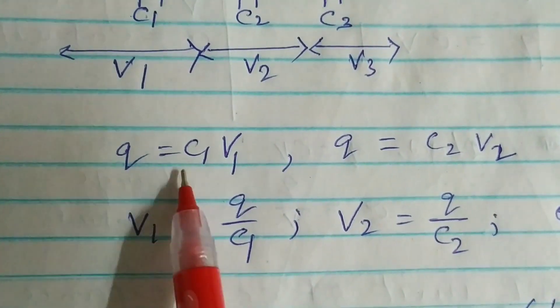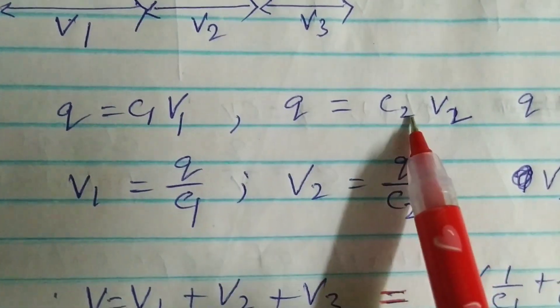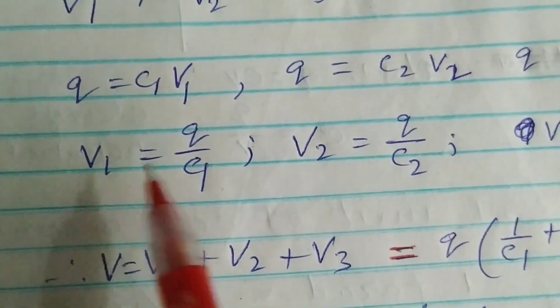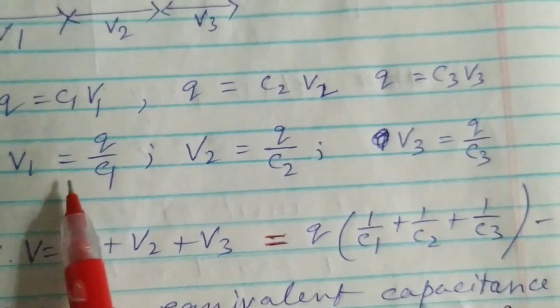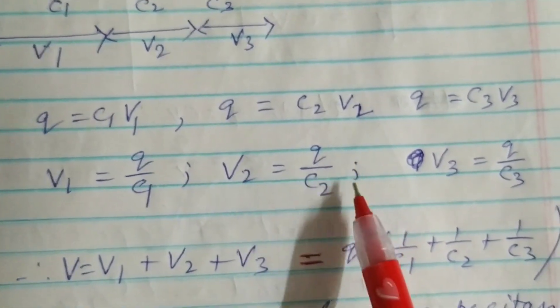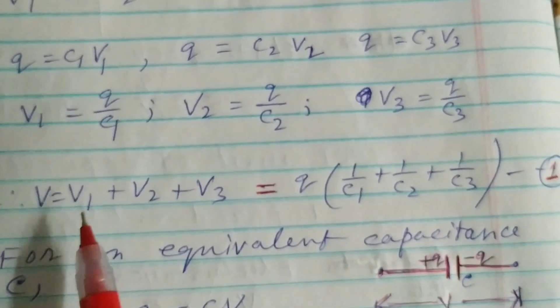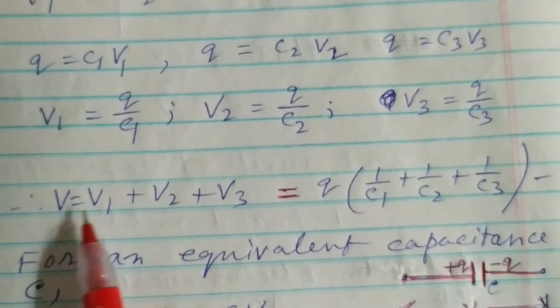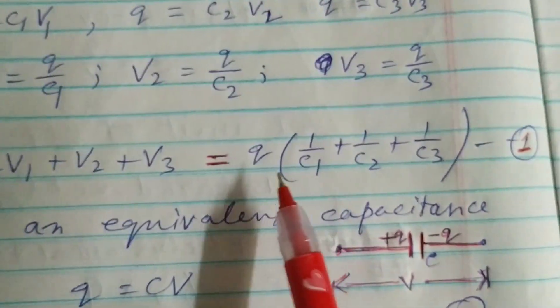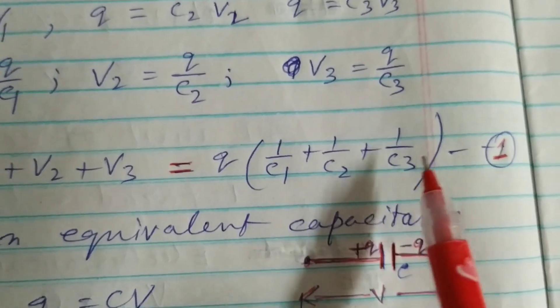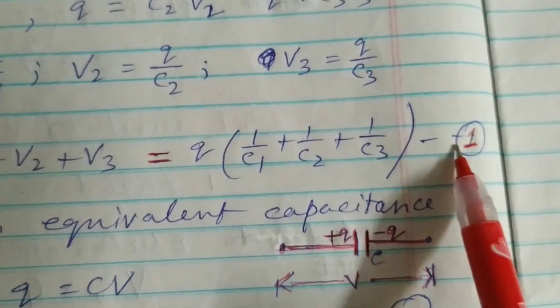So our formula: Q equals C1 V1, Q equals C2 V2, and Q equals C3 V3. Therefore V1 is Q by C1, V2 is Q by C2, and V3 is Q by C3. If I add all this and say that this is V, so V equals V1 plus V2 plus V3 equals Q times (1 by C1 plus 1 by C2 plus 1 by C3), equation number 1.